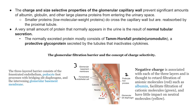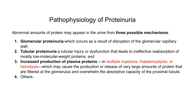As seen in the diagram, the three-layered glomerular filtration barrier consists of fenestrated endothelium, podocyte foot processes with bridging slit diaphragms, and the intervening glomerular basement membrane. The negative charge associated with each of the three layers is thought to retard filtration of anionic molecules such as albumin, facilitate the filtration of cationic molecules, and have little impact on neutral molecules.